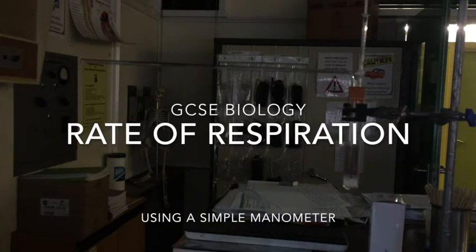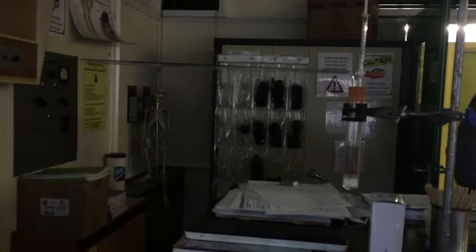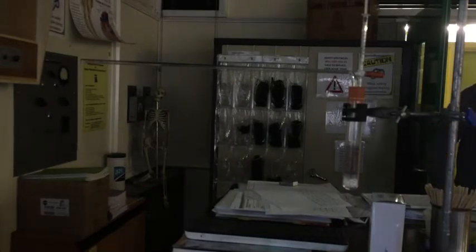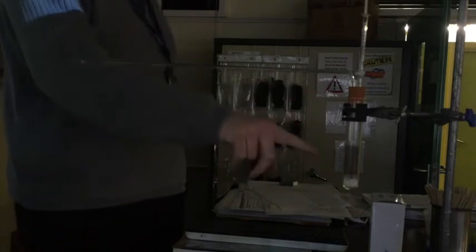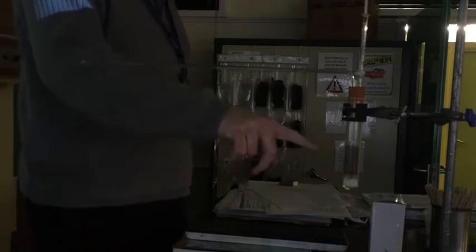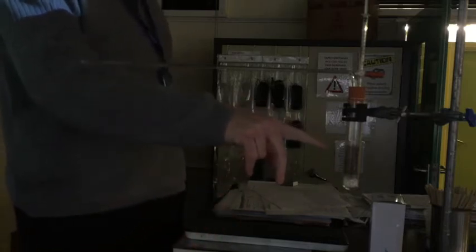Okay, so what we've got here is our basic respirometer. It's only a basic respirometer because our more complicated ones can actually have two tubes, which I'll explain later. Let's take you through the parts of the respirometer. So first of all, we have got a simple boiling tube here, and in a little container here we have got some organisms which are going to respire aerobically, and those are just some maggots.